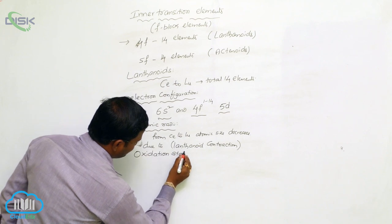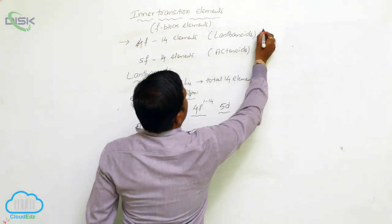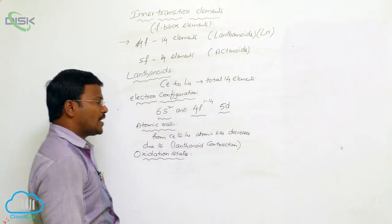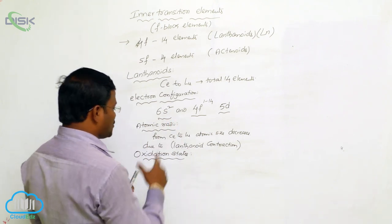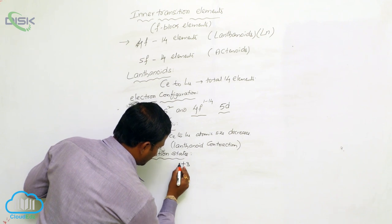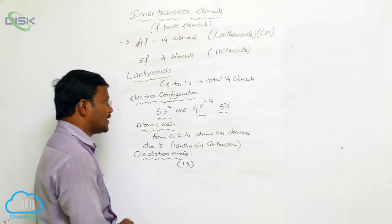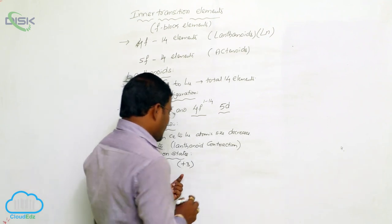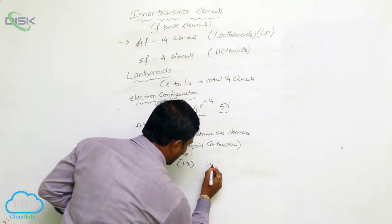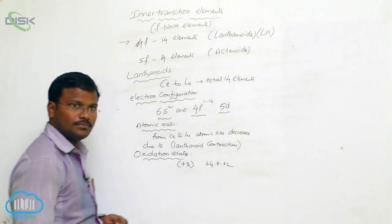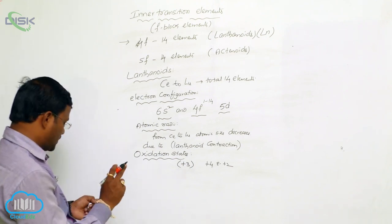Regarding oxidation states: lanthanides are represented as Ln. The well-known and most common oxidation state of lanthanides is +3. This is the general oxidation state exhibited by all elements in the lanthanide or 4f series. In addition, some elements of this series also exhibit +4 and +2 oxidation states, but the most favorable and general oxidation state remains +3.